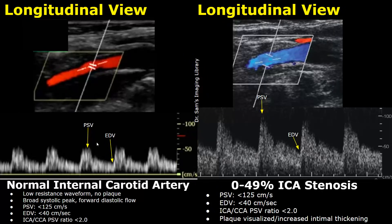In this image, the PSV is slightly more than 50 cm per second and the EDV is around 25 cm per second. This is an image of internal carotid artery stenosis — a 0 to 49% stenosis. In this case, the PSV and EDV values will be normal, and the ICA to CCA PSV ratio will also be normal. But a plaque will be seen within the lumen or there will be increased intimal thickening. Here, the PSV is around 100 cm per second and the EDV is around 40 cm per second.